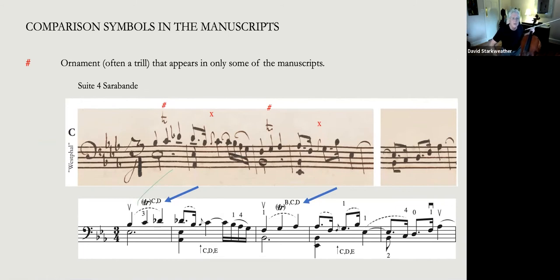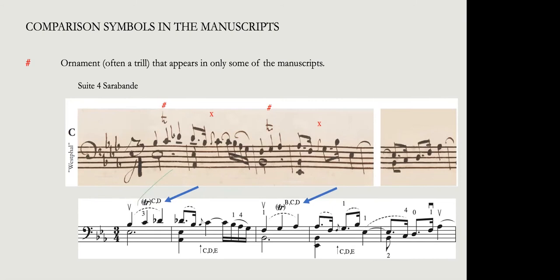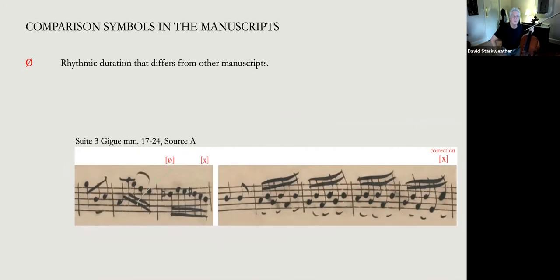I also use the sign for trills and other ornaments. A little hashtag sign. And again, you see the use of the X when there's a note that doesn't appear in some other sources. So the ornament, if you look in my modern notation at the bottom, is then indicated with parentheses around the trill and showing that that trill only appears in sources C and D. And then this next trill, which also would not be something we're used to hearing, is in sources B, C, and D. So this is new information for a lot of people, I think. I had never known about trills on those notes before.